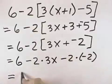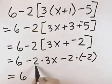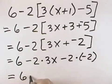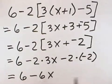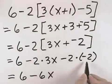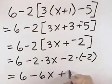So that gives us 6, and then negative 2 times positive 3 is minus 6x, and a negative 2 times a negative 2 is a positive 4.